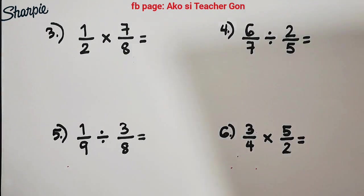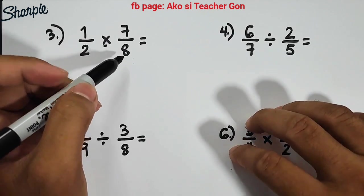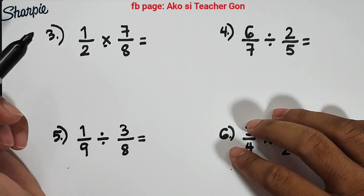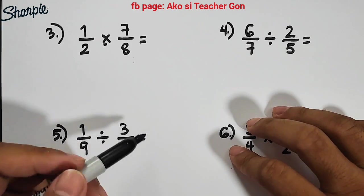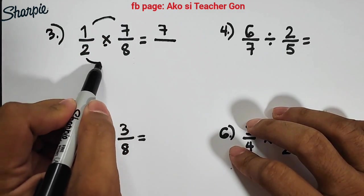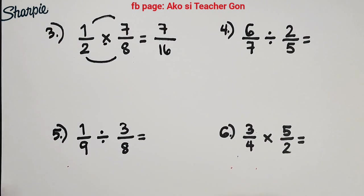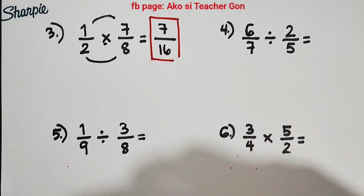Let us proceed with multiplication and division. For number three, we are given 1/2 times 7/8. Remember guys, there's a method of cancellation, but what we are doing here now is the common way, which is simply multiplying the numerators and denominators, and eventually we will simplify our answer. We have 1 times 7 equals 7 over 2 times 8 equals 16. If you're good with simplifying fractions, you know that 7/16 is already in lowest terms. So 1/2 times 7/8 equals 7/16.